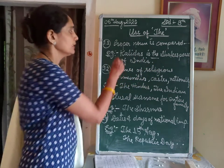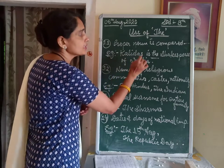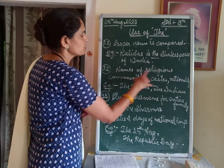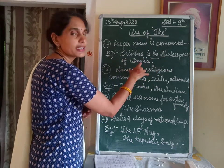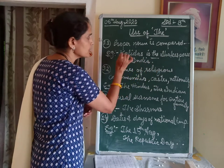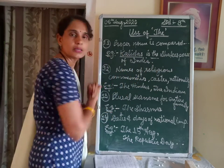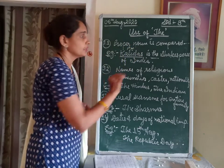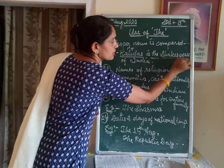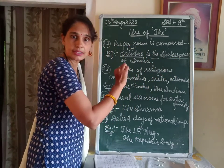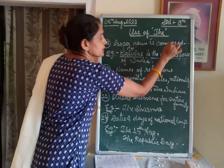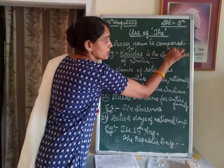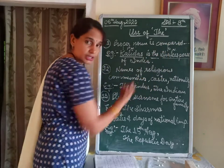Let's see an example: 'Kalidas is the Shakespeare of India.' Here, Kalidas is a proper noun. Shakespeare is also a proper noun — he is a famous writer.